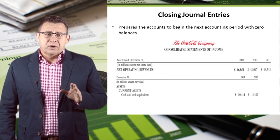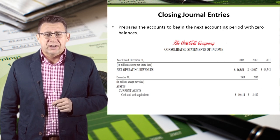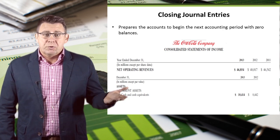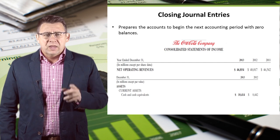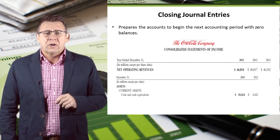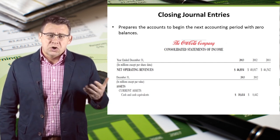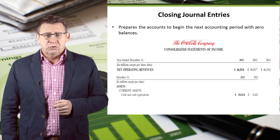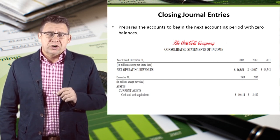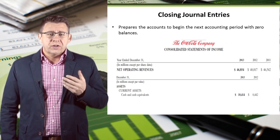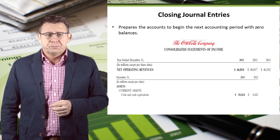Here are some data from Coca-Cola's 2013 financial statements. Operating revenues is a temporary account. The amounts shown are the amounts earned in that year, not the total amount of revenue Coke has ever earned. So each year, revenues are closed so that Coke can begin tracking revenues for the next year.